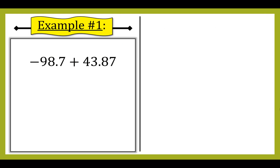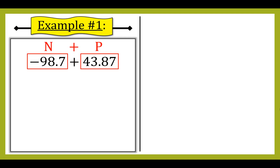Let's look at an example. Here I have negative 98.7 and positive 43.87. I like to label them, so I put an N for negative and a P for positive. I have a negative plus a positive. The reason I reviewed the integer rules is so I know whether I'll be adding or subtracting and whether my answer will be positive or negative.